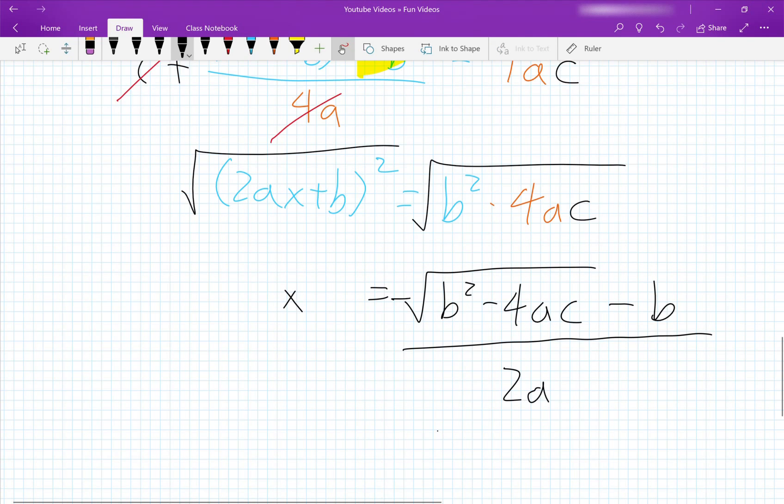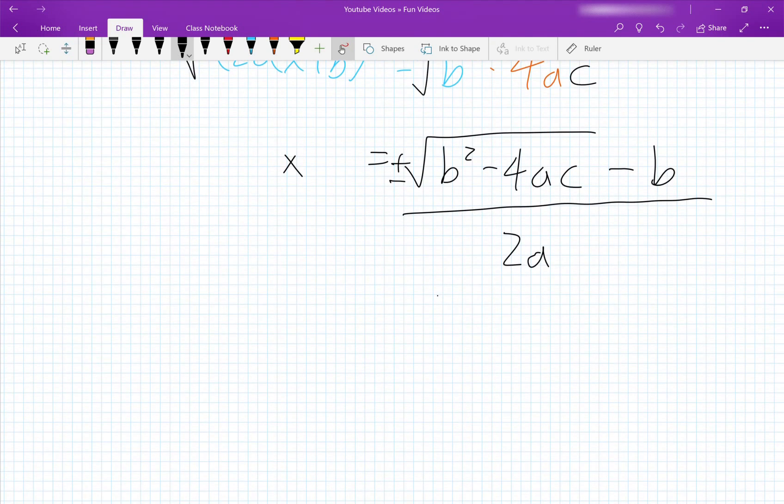And remember that the square root is always plus or minus. And all we have to do is simple rearrangement to make this into the formula we know and love today. x equals negative b plus or minus the square root of b squared minus 4ac over 2a.